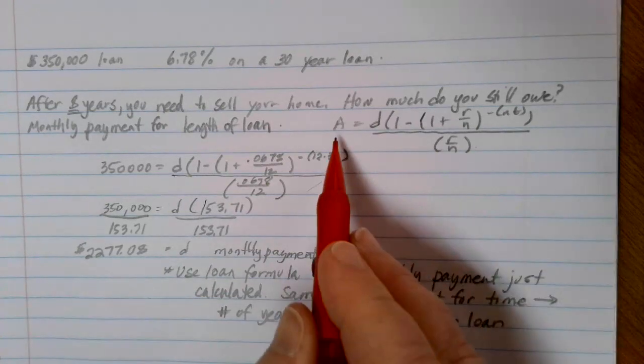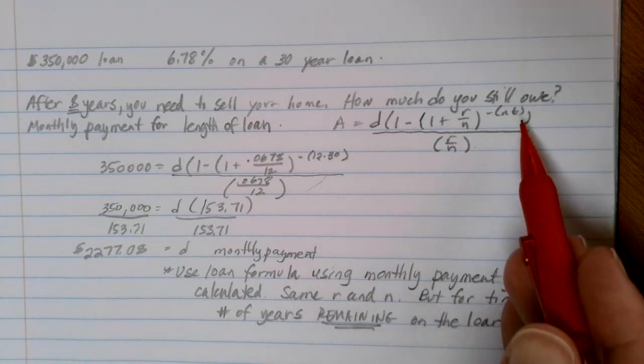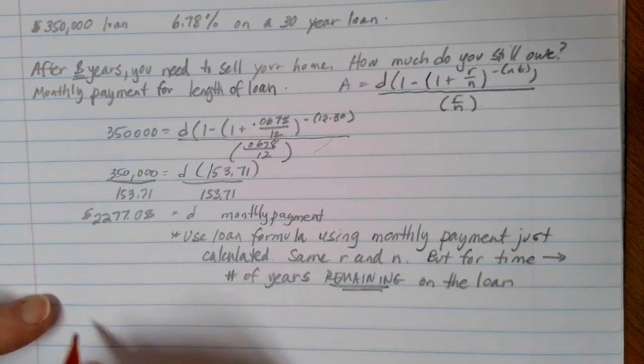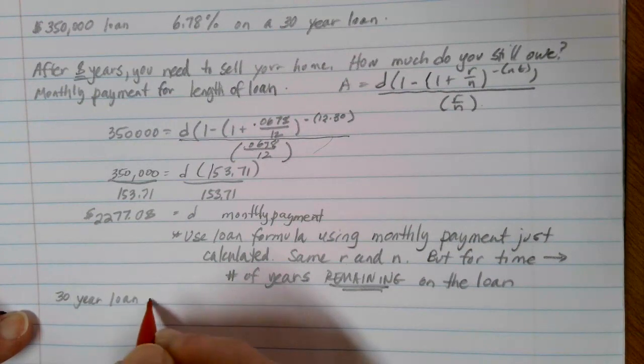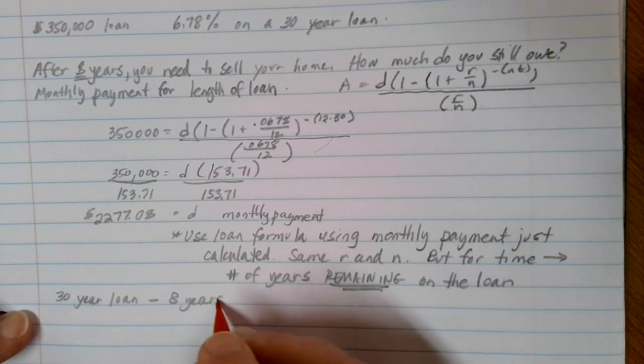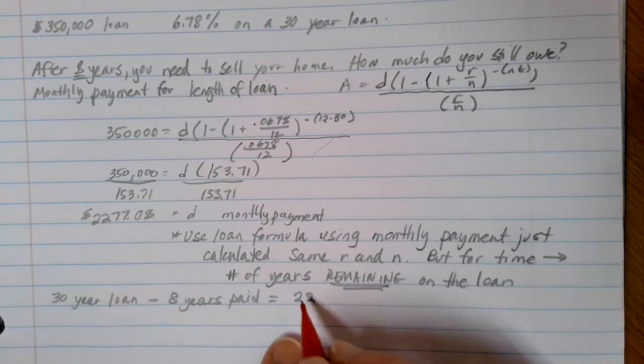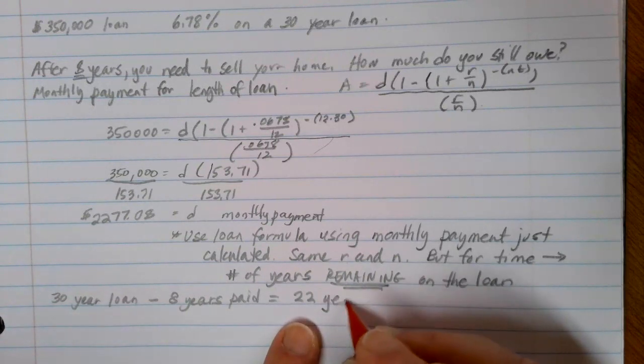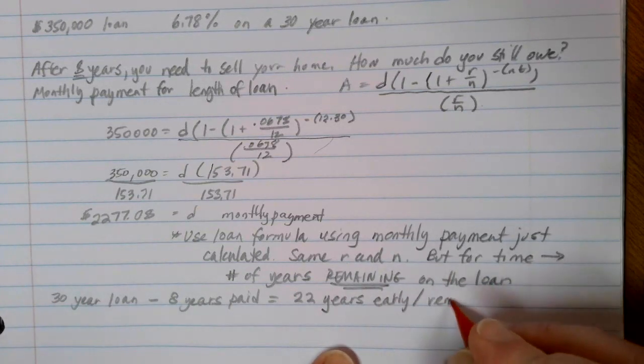So basically, we're figuring out what A is if we were to continue to make that same sized payments for everything that's left on the loan. And that'll get us our payout amount. So in this case, we had a 30 year loan. We are paying it back after eight years. And so essentially, what we're doing is we are leaving the loan 22 years early. And that's how much is remaining on the loan.